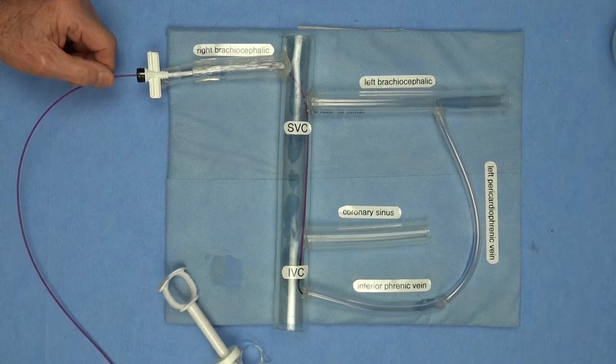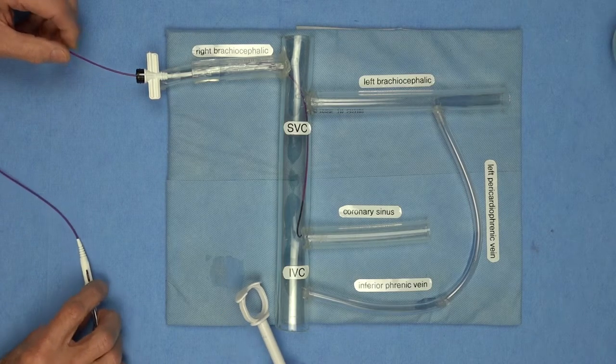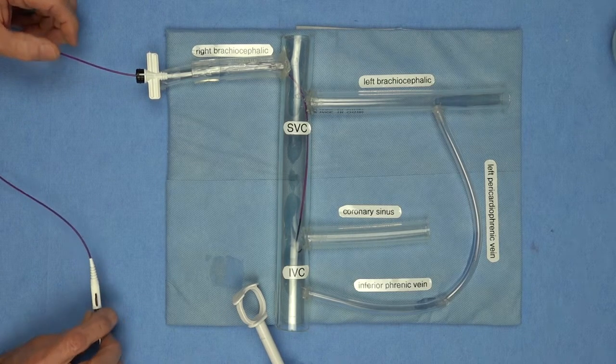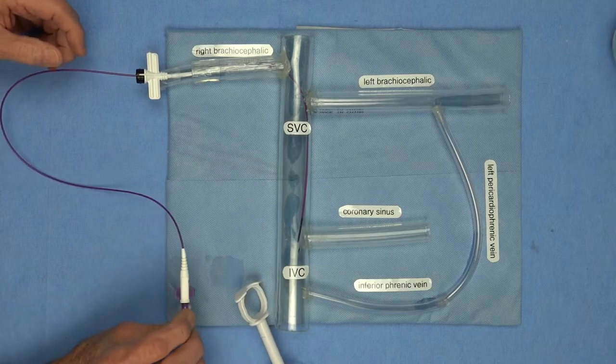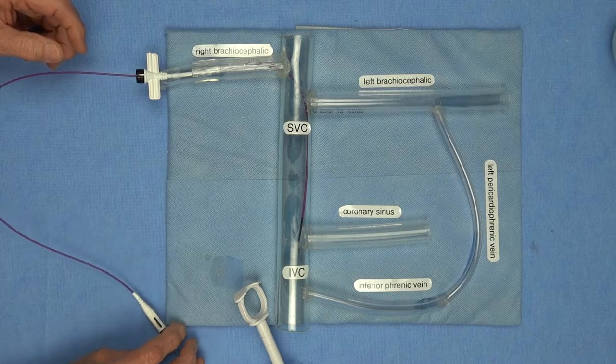And so what you can do is you can take a catheter, and in this case, I'm using a Merit standard curve that we use for the CS.